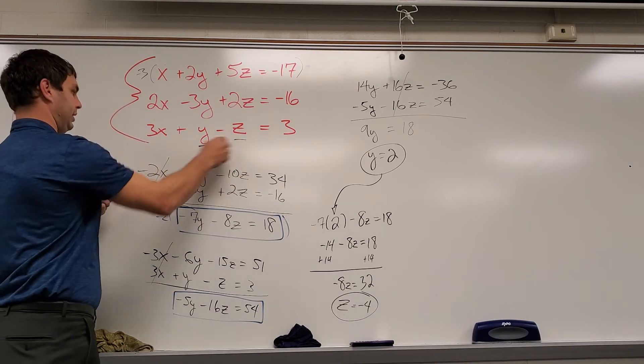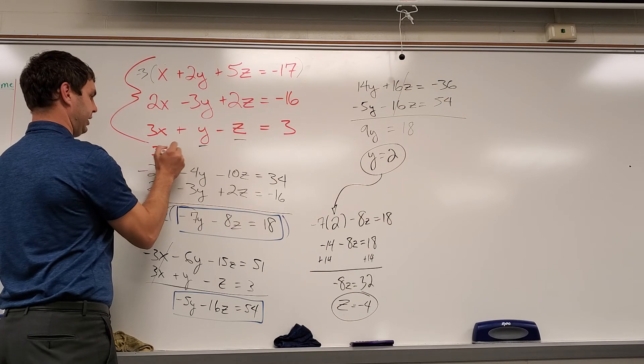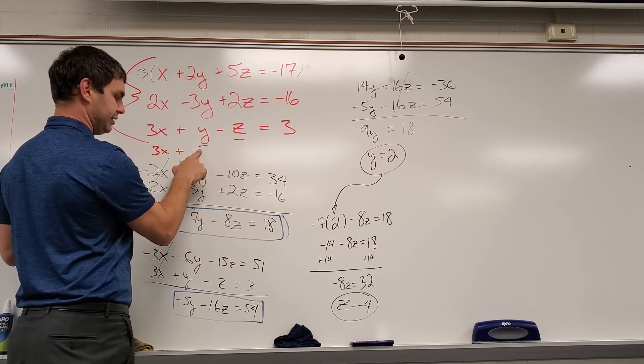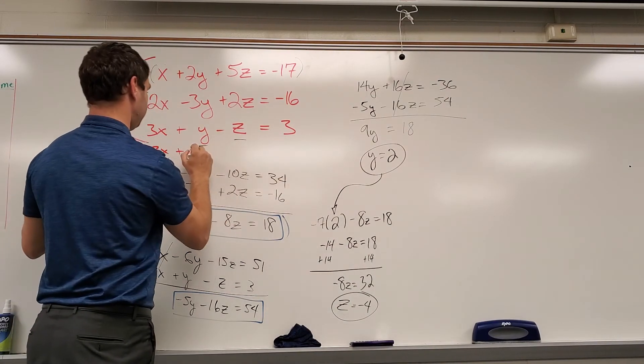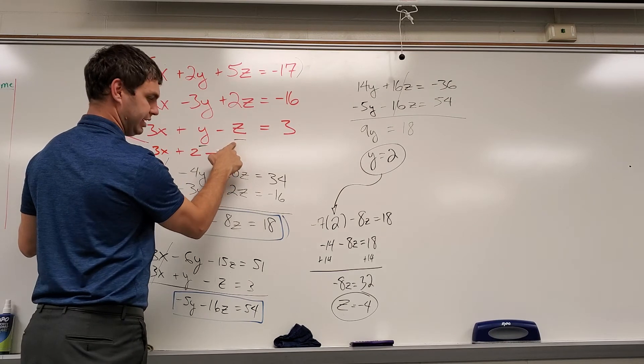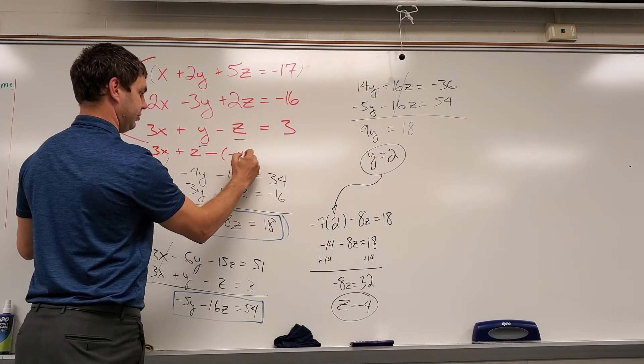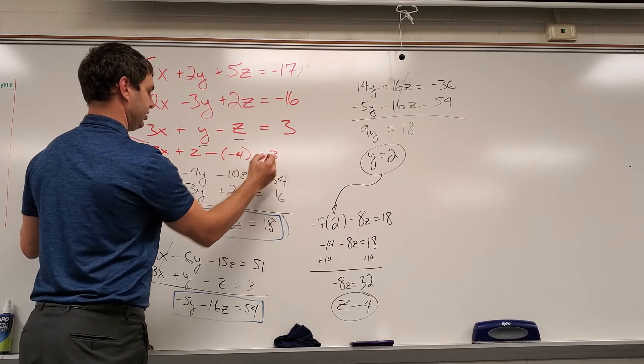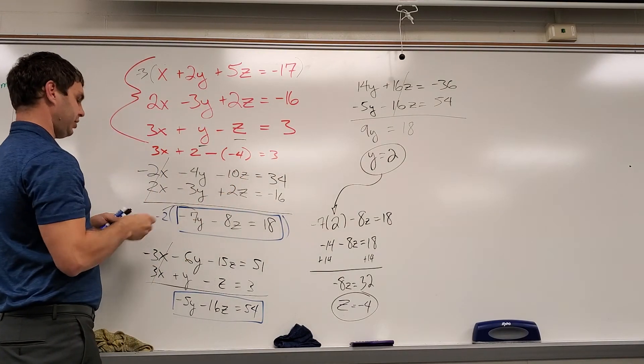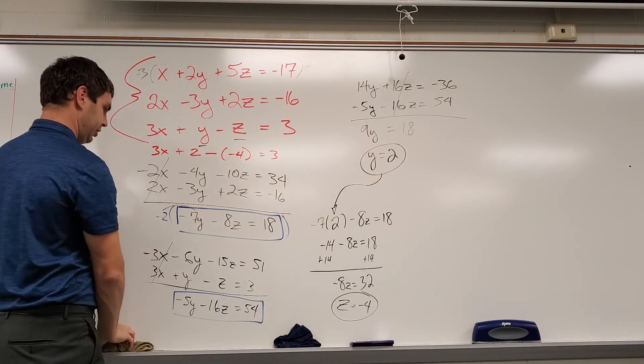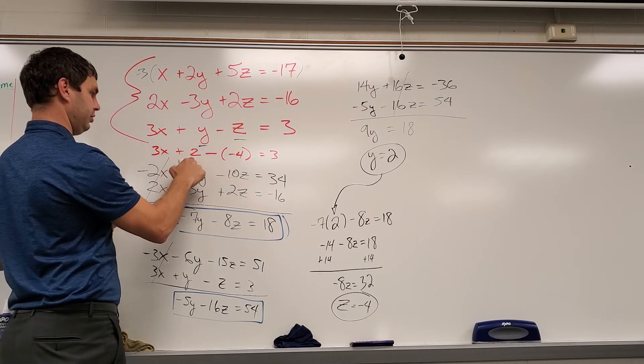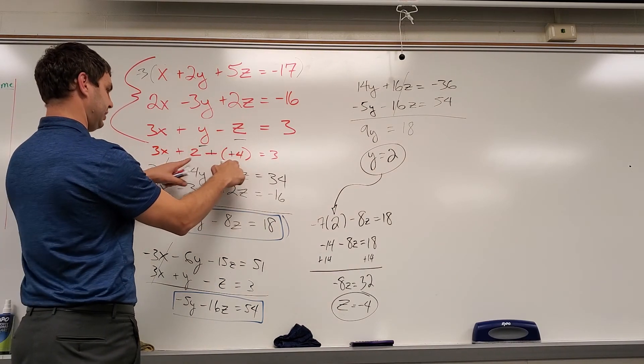So instead of y and z, let's replace that. We're going to have 3x plus, instead of y, we're going to do 2. Minus, instead of z, we're going to have negative 4. Be careful with this. It's minus the whole z. It's minus a negative 4. That should equal 3. And if I solve this here, let's see, 2 plus 4 is 6.